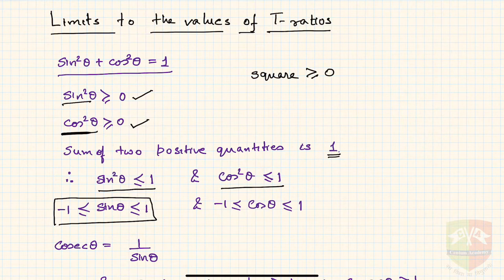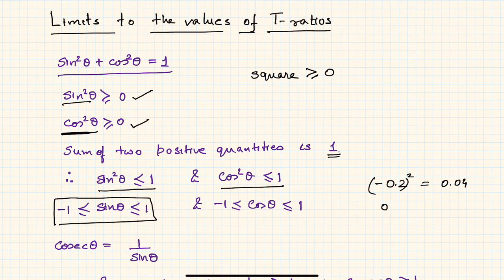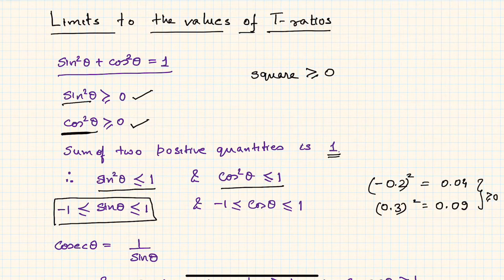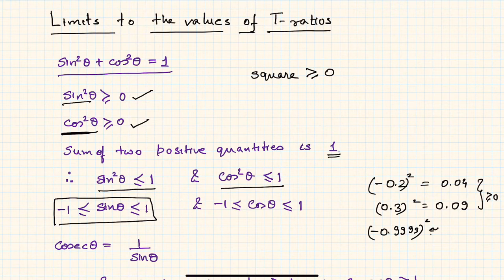For example, if we take −0.2, squaring gives 0.04; if we take 0.3, squaring gives 0.09 — both are non-negative. Even taking a value like −0.999999, its square is very close to 0.999999, still less than or equal to one. This confirms the pattern.